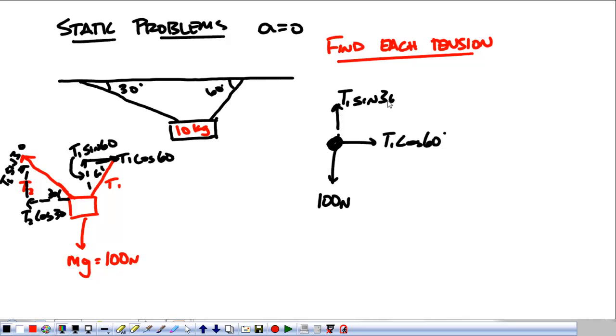Tension 1 times the sine. Up, we have tension 1 times the sine of 60 degrees. Also pulling up, we have tension 2 times the sine of 30. And pulling over, we have tension 2 times the cosine of 30.